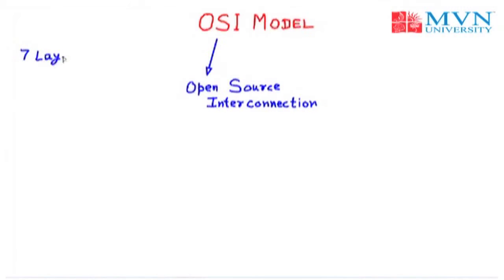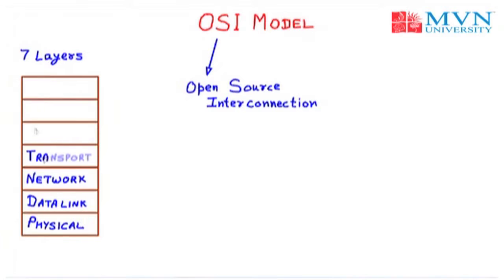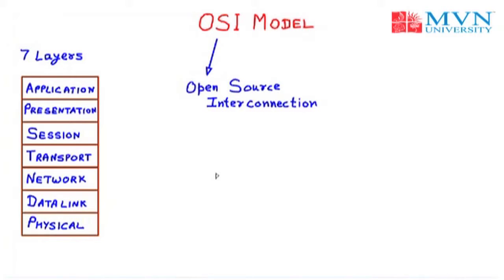An OSI model contains seven layers, so we also call it the layered architecture with seven layers. At the bottom we have the first layer called the physical layer. Second, we have the data link layer. Third, the network layer. Fourth, the transport layer. Fifth, the session layer. Sixth, the presentation layer. And lastly, the seventh layer is the application layer. We can also provide numbers to these layers, from layer one up to layer seven.